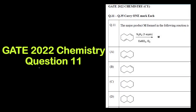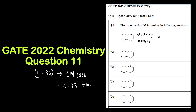Hello everyone, welcome to Chemazon Complete Chemistry. In this video we are going to solve question 11 of JEE 2022 chemistry paper. Questions 11 to 35 are of how many marks? The initial 25 questions are of one mark each and there is a negative marking of 0.33, which is only for MCQ type questions where there is only one correct answer.